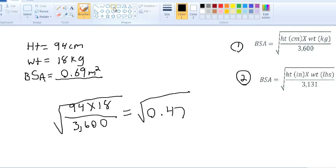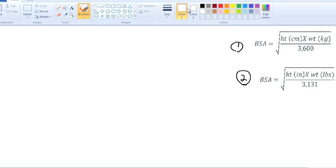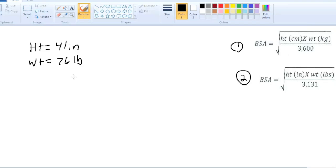Now, this is your last and final example. Say we got a height of 41 inches and a weight of 76 pounds. What's our BSA? So, again, 41 times 76. Which one are we going to use? Inches and pounds. Again, 31, 31, 31 days in December, right? 31, 31. So, 3,131. Don't forget that square root button.